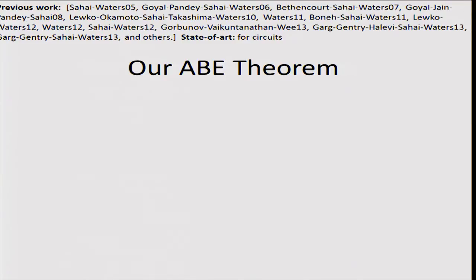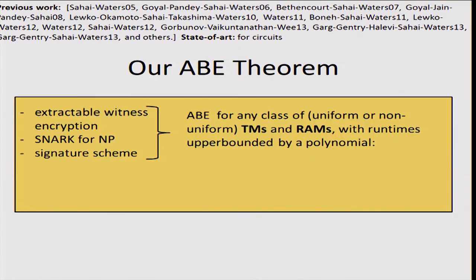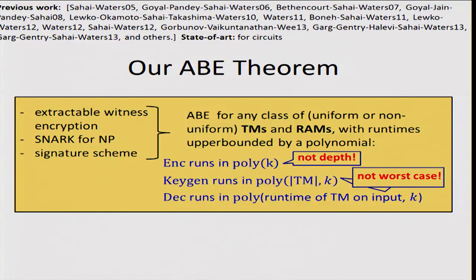There has been a lot of previous work on attribute-based encryption for circuits. Our ABE theorem for Turing machines is a reduction from three ingredients: extractable witness encryption, SNARKs for NP, and a signature scheme. We obtain ABE for any class of Turing machines and RAMs with runtimes upper-bounded by a polynomial. The encryption algorithm runs in time depending only on the security parameter, not on the depth of the computation. Key generation runs in time depending only on the description of the Turing machine. Decryption runs in time depending on the actual running time of the Turing machine on the specific input X, and you must have decryption depend on that running time because at some point you have to run the Turing machine on X.